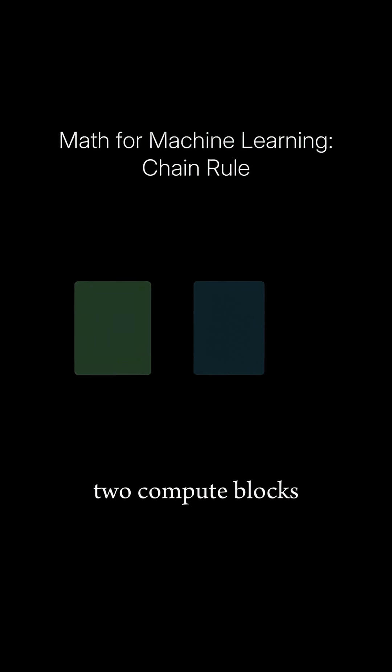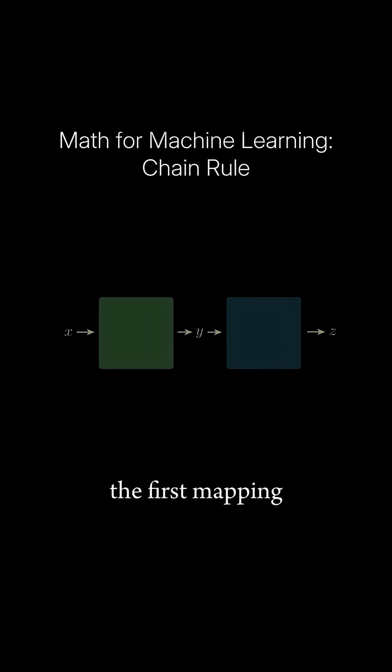Consider this simple example where we have two compute blocks. The first mapping some input x to an output y with the equation y equals 2x, and a second compute block mapping y to z with the equation z equals 4y.